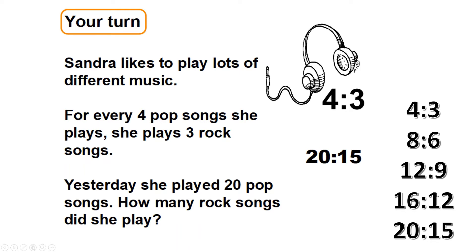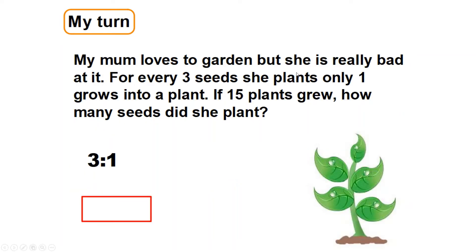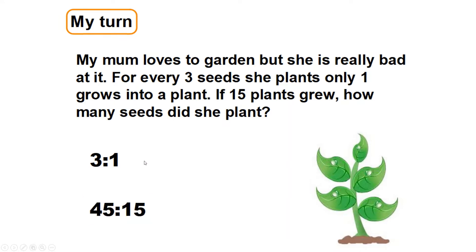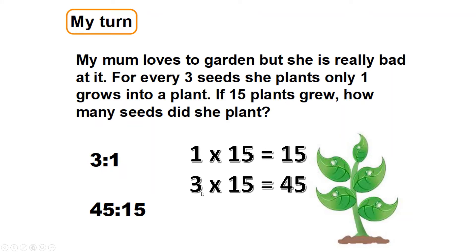My mum loves to garden but she's really bad at it — for every three seeds she plants, only one grows into a plant. If 15 plants grew, how many seeds did she plant? The ratio is three to one. I need to make the one into 15, so I times one by 15 — one times 15 is 15. Then I times three by 15: three times 15 is 45. So she plants 45 seeds to get 15 plants.